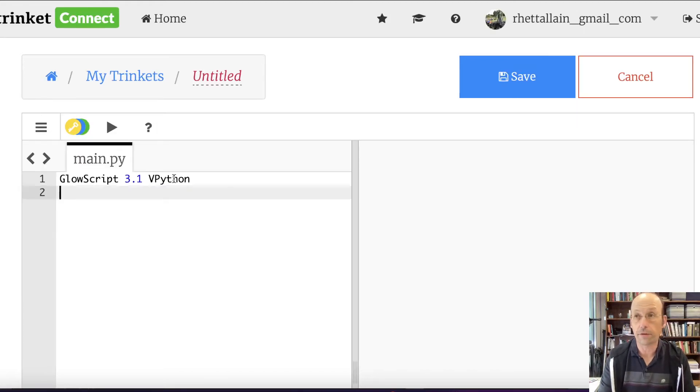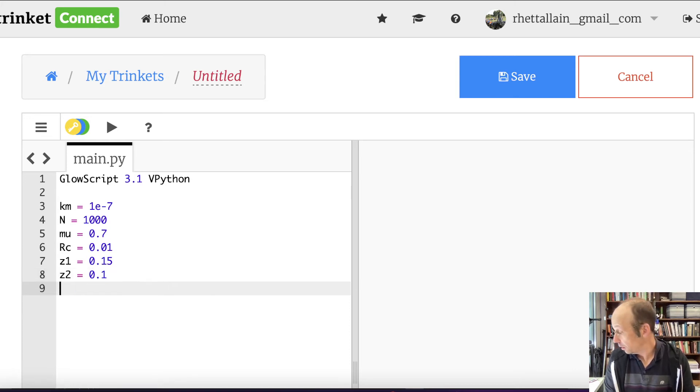I've got a Python script already opened up. So let's just put in all my constants. Km is 1 times 10 to the negative 7. This is going to be μ₀ over 4π. I'm going to call it Km just because it's easier to do it that way. Now I'm going to say n equals 1,000. I'm just typing in what I have. Mu equals 0.7. There's no units here because this is Python. Rc equals 0.01. Z1, 0.15. Z2 equals 0.1. DT equals 0.2.